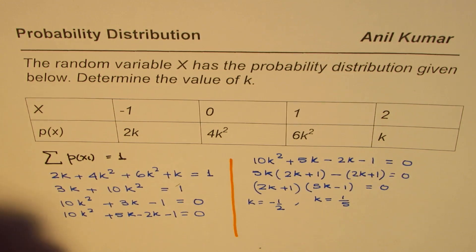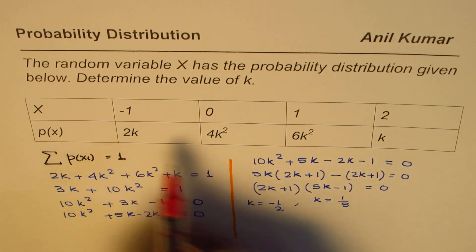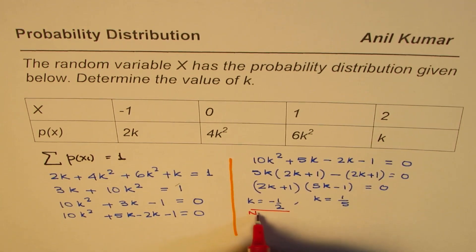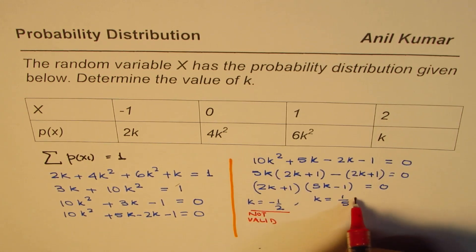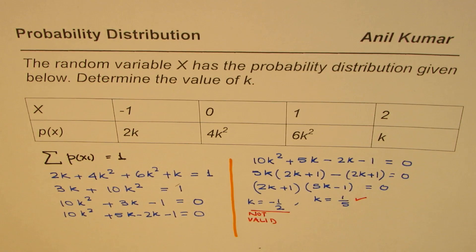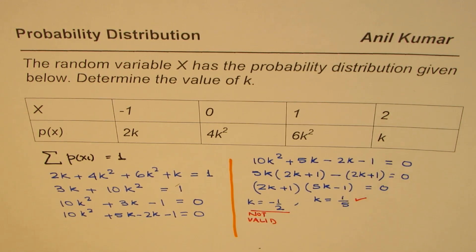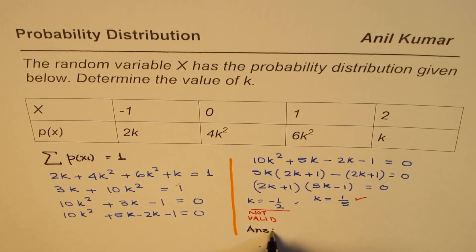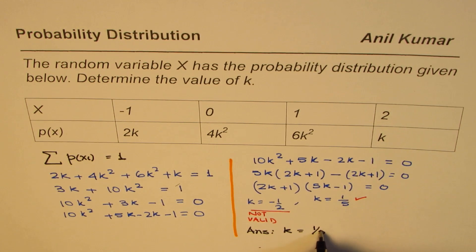As you know, k cannot be a negative value since it will give you these probabilities as negative, so that is not valid. So this is the valid answer. So k equals 1 over 5, so that is the valid answer and therefore, we can write down our answer as k equals 1 over 5.